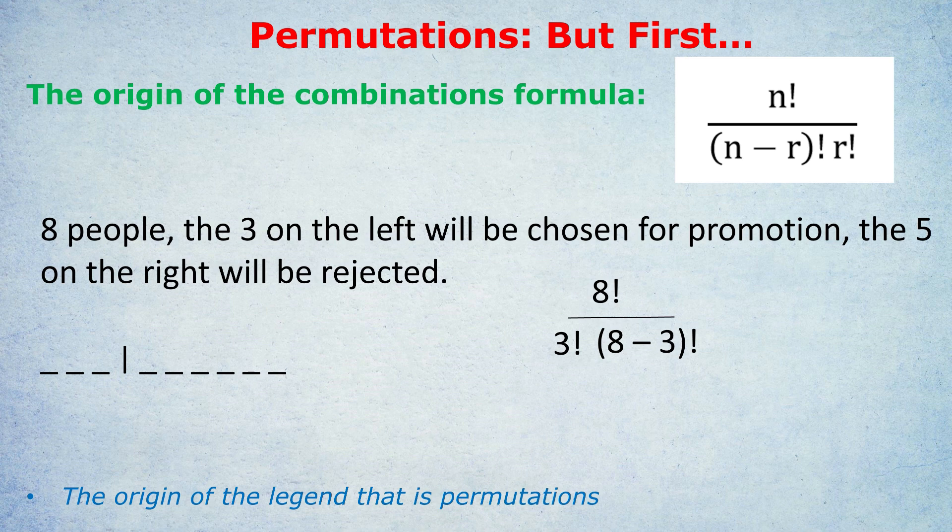So we're getting rid of the duplications among the people we're not selecting, and that gives us the correct answer. Now you know the origin of the combinations formula. I think that's really good to know. And now you can see that and hopefully understand that. When I tell you the permutations formula, rather than just being another formula, you'd be like, oh, maybe I kind of get that now.